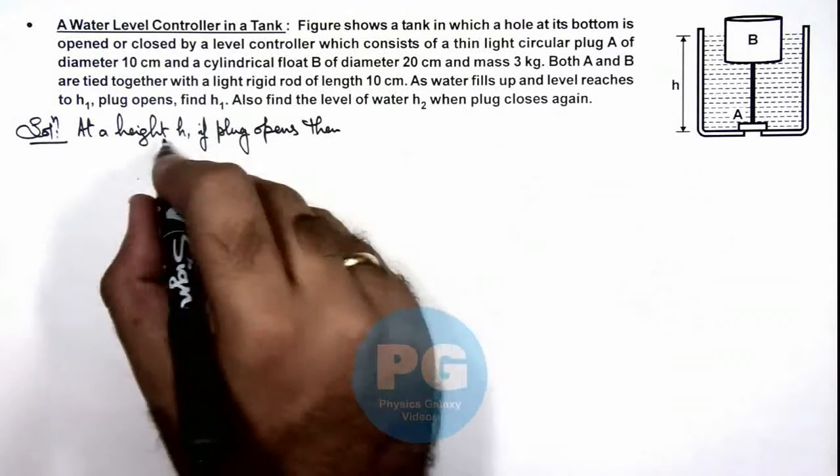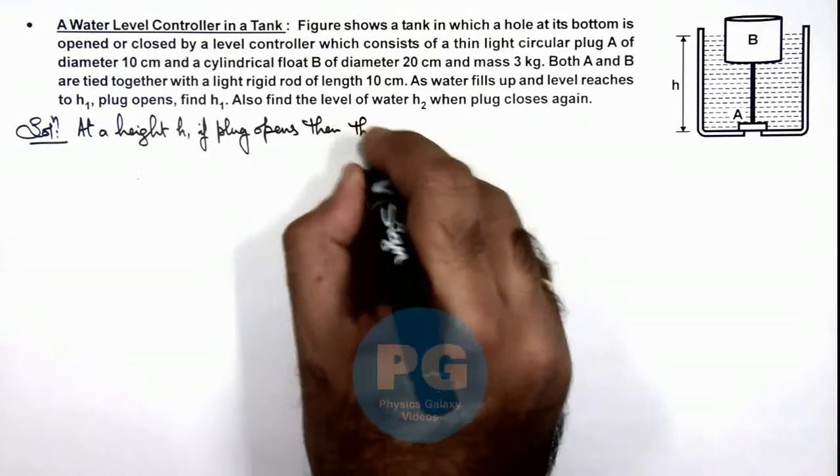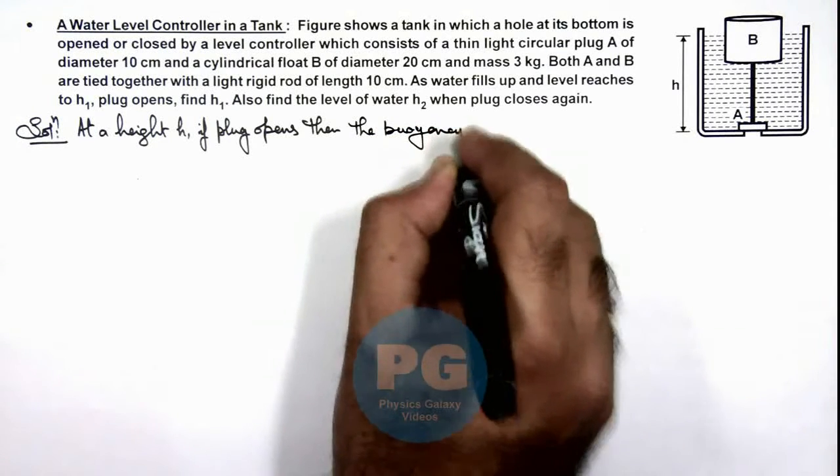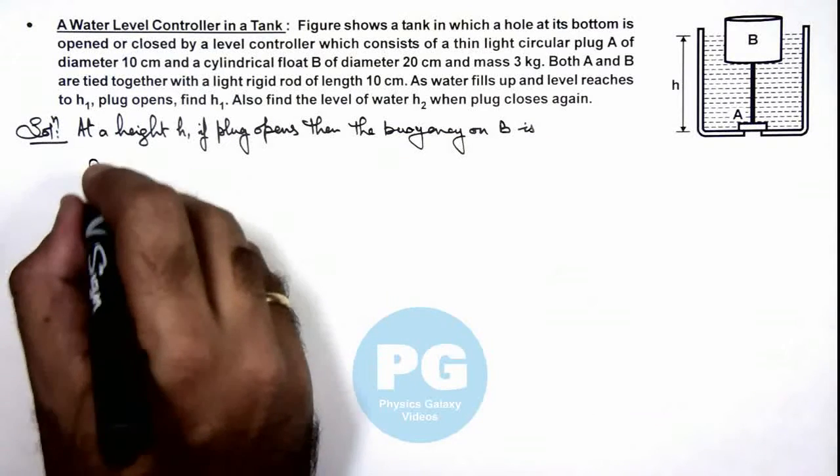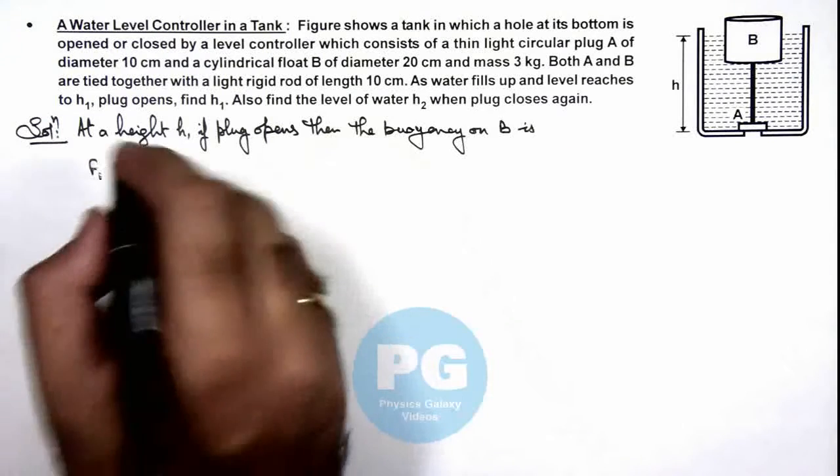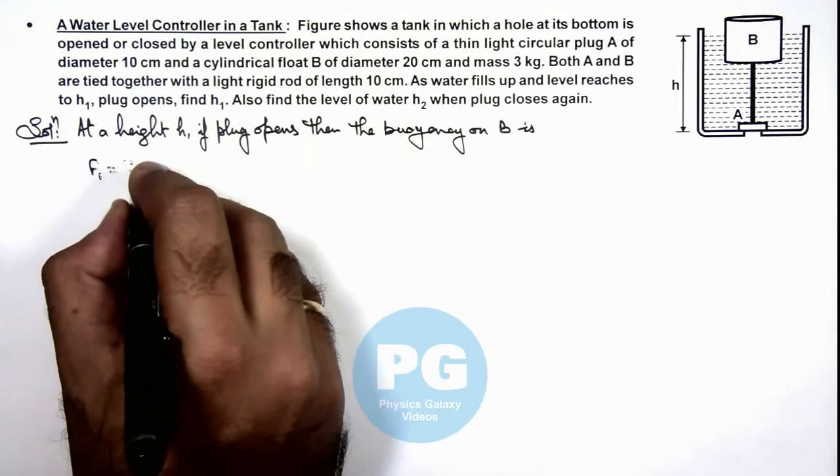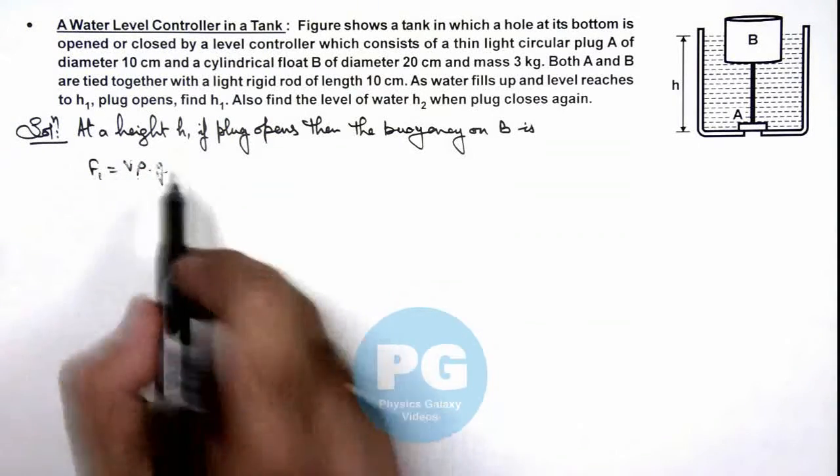So we can calculate if plug opens, the buoyancy on B is the upward force F₁ acting on B. This can be written as submerged volume multiplied by density multiplied by g. This is the volume of the liquid displaced.